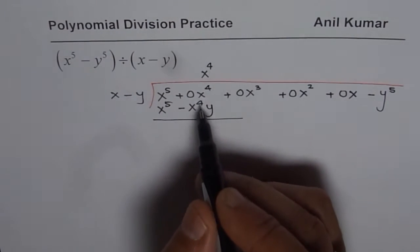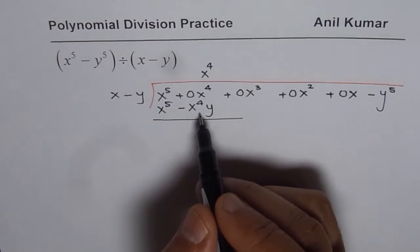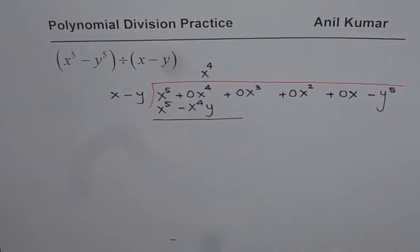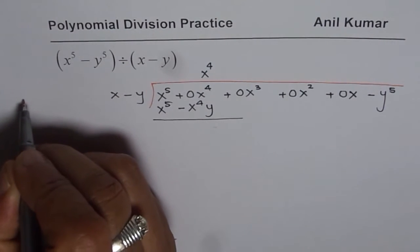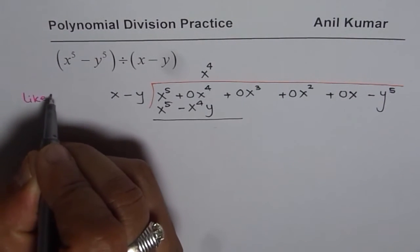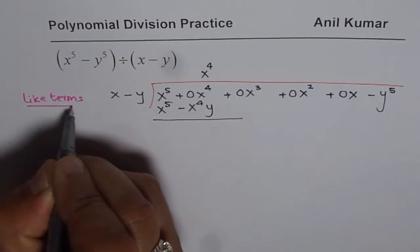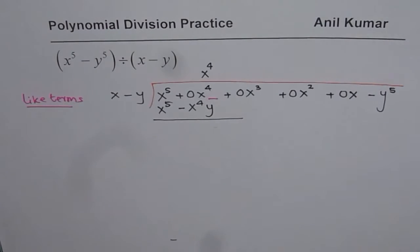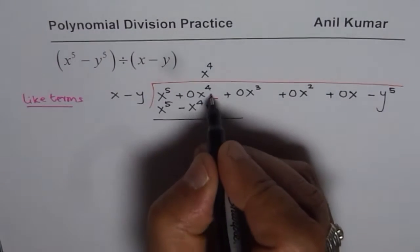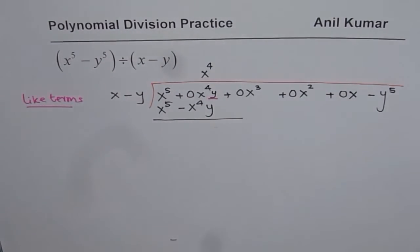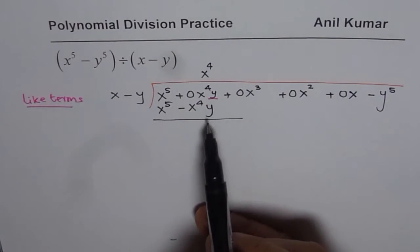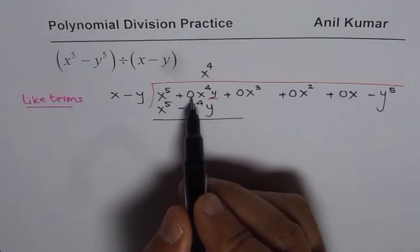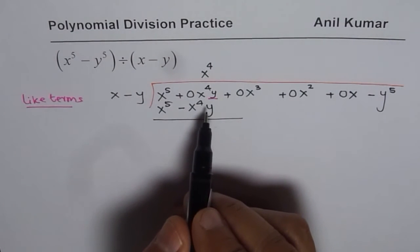Now we need to take away from 0x to the power of 4, but how do we take away this particular term? That's a big question. There is no easy way out unless we make them like terms. Like terms is the solution. This term should be a like term, so I should introduce y here. Do you get the idea now?